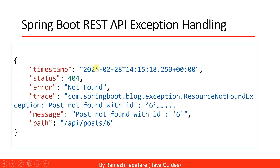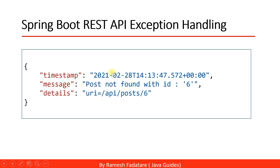This is the default Spring Boot REST API error response, and we are going to customize it to include fields like timestamp, message, and details. If you want to include any other fields in the error response, you can add them — we'll see this more in the coding section.